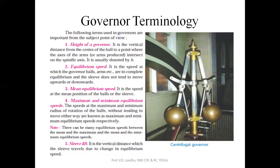The second terminology is Equilibrium Speed. Equilibrium Speed is the speed at which the governor's balls and arms are in complete equilibrium and the sleeve does not move upward or downward. The forces acting on the balls will be balanced so there is no movement of the sleeve and the sleeve position remains fixed. This speed of the governor is called the Equilibrium Speed.